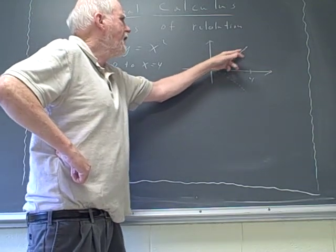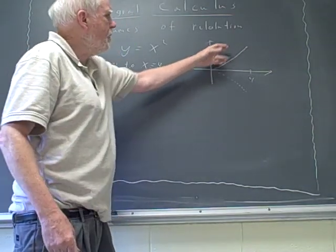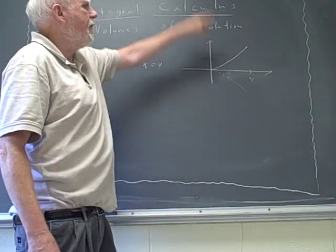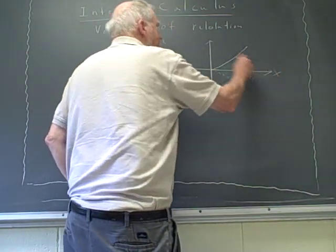And I draw it here like this, here 0 to 4. And then what I'm going to do is rotate this thing around the x-axis, the x-axis here.